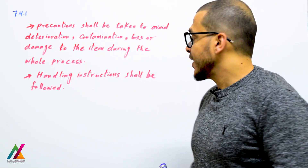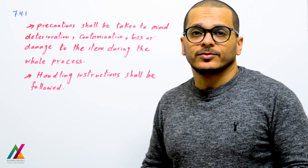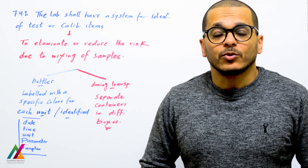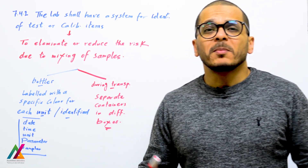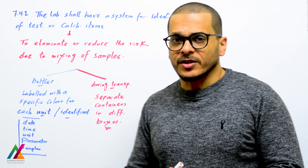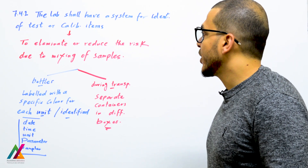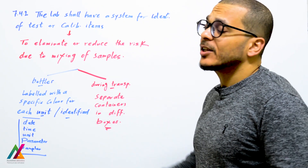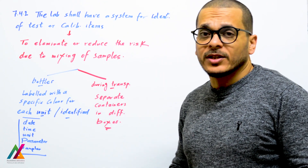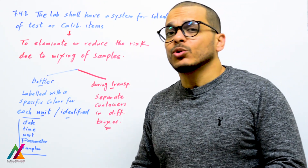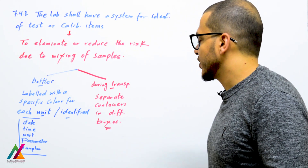An identification system for test or calibration items is very important to prevent mixing of items together. The lab shall have a system for identification of test or calibration items to eliminate or reduce the risk due to mixing of samples in the case of test items, or mixing of calibration items in the case of a calibration laboratory.